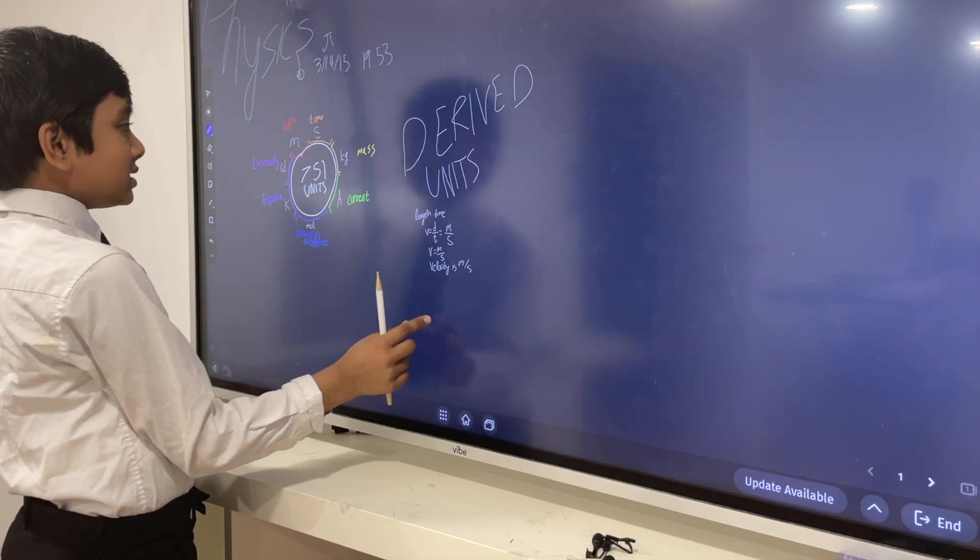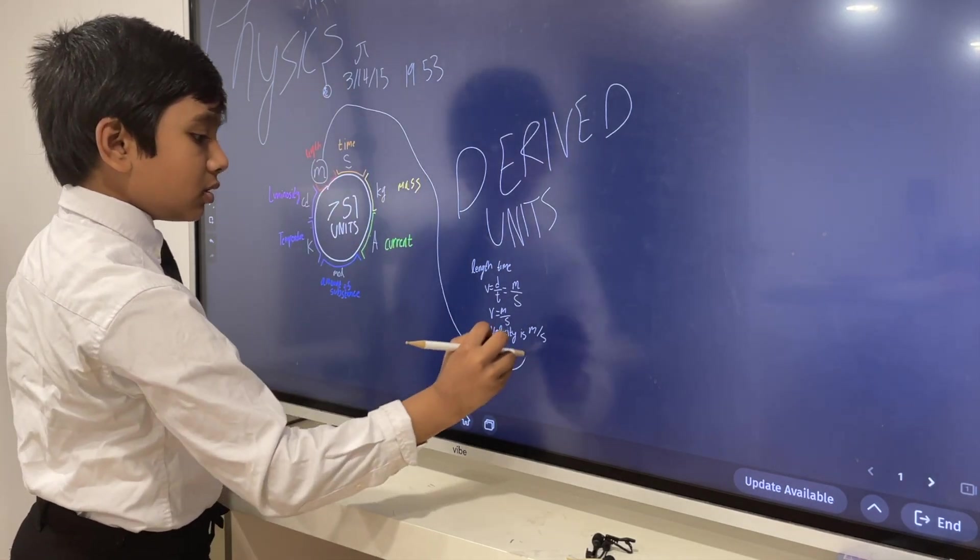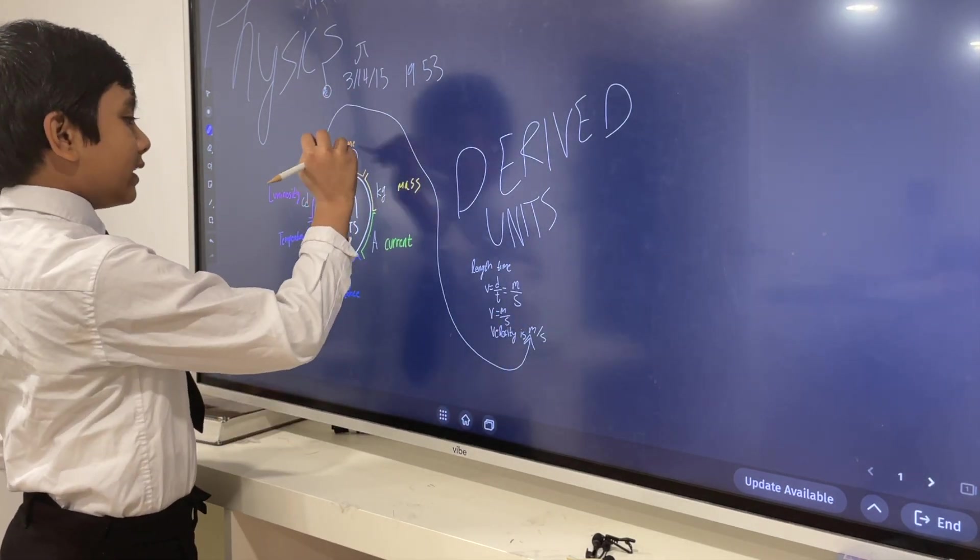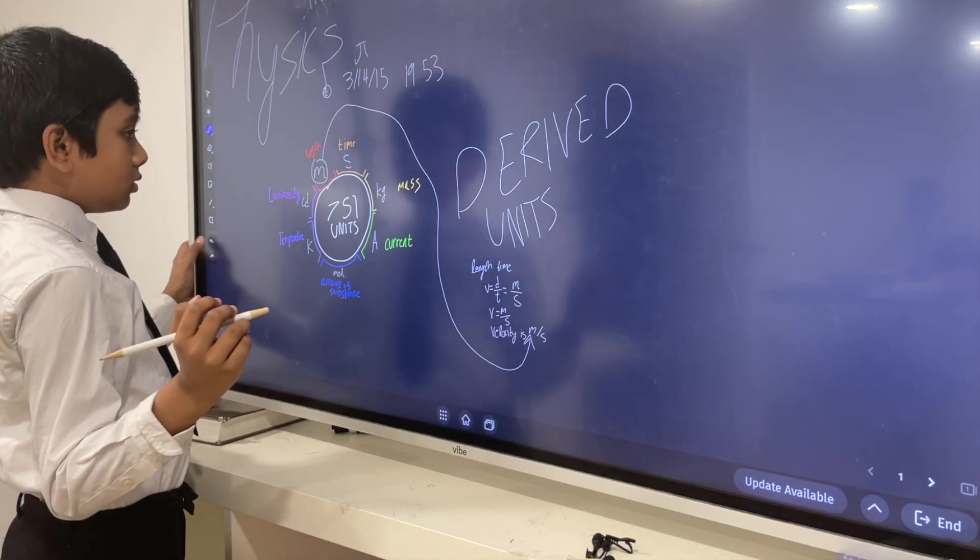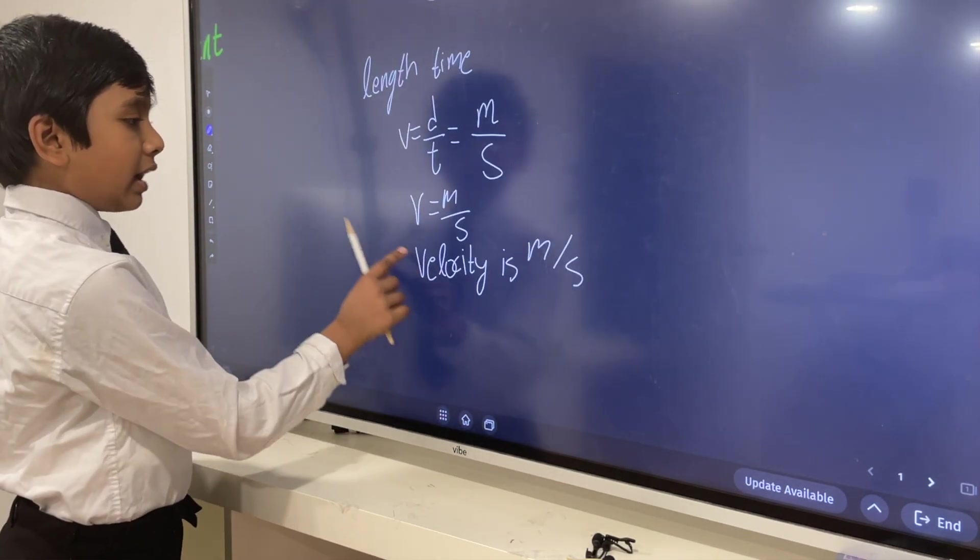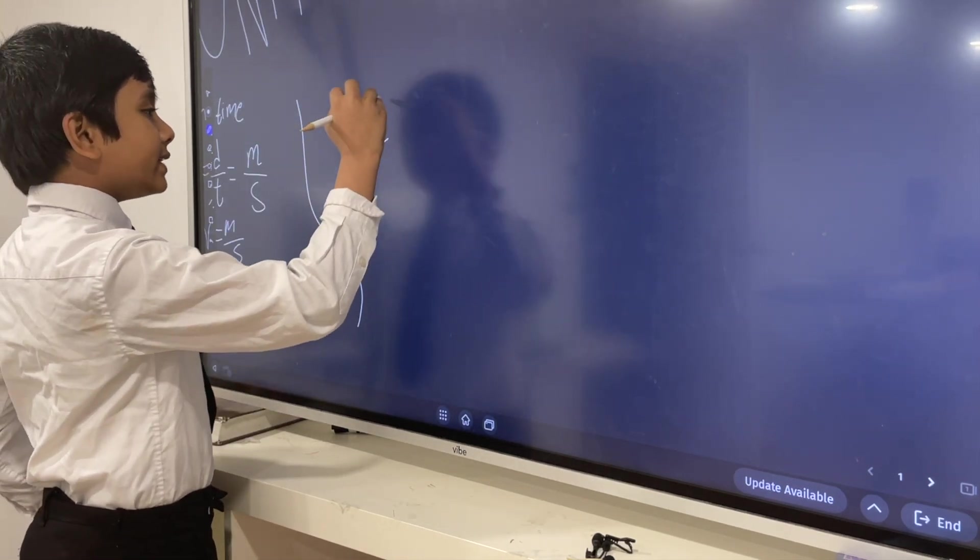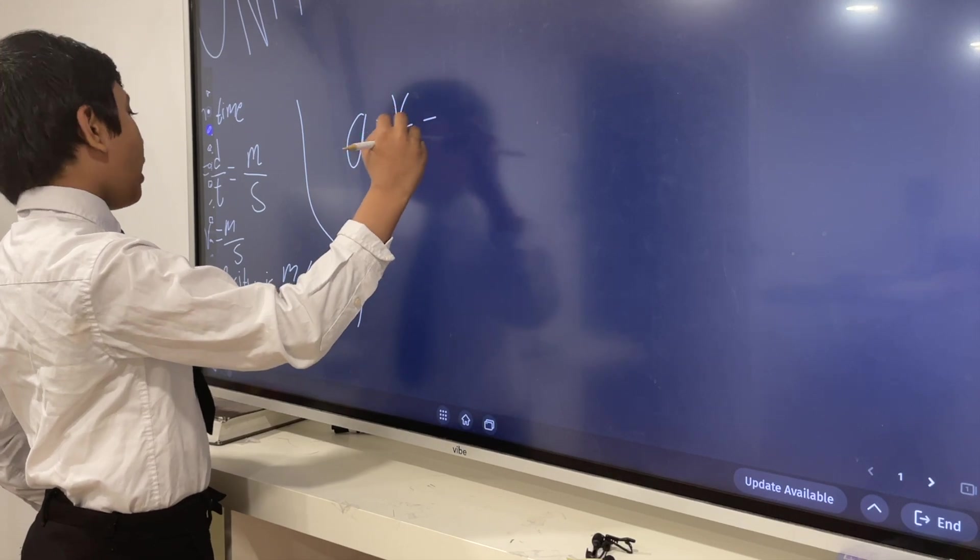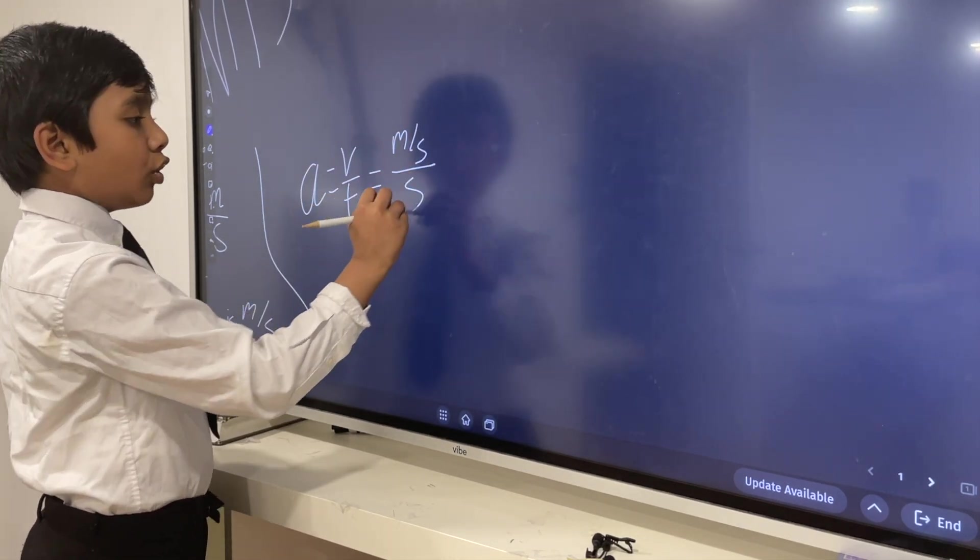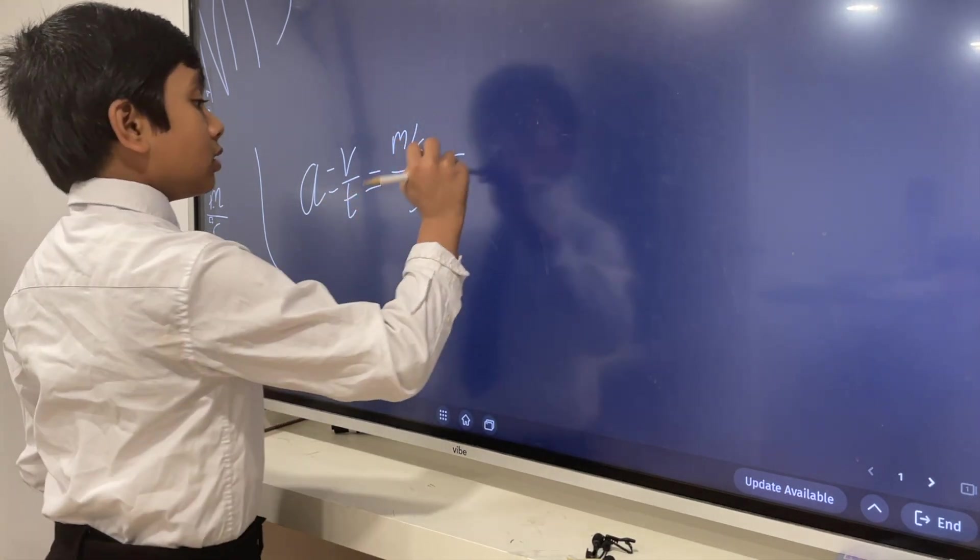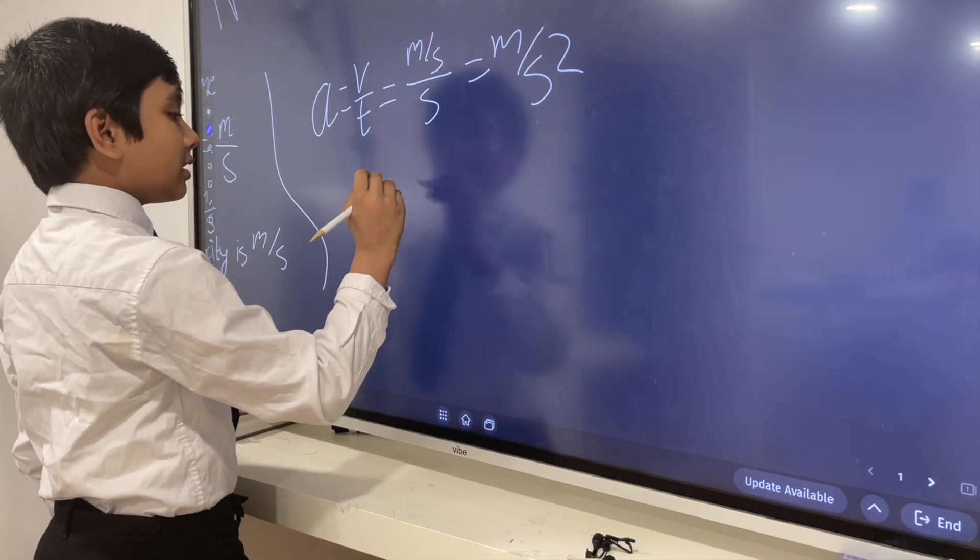Notice how we can take those fundamental quantities and place them here. So now, what about acceleration? Well, acceleration changes velocity over time, which would be, once again, meters per second over second, which would be meters per second squared, which is acceleration's unit.